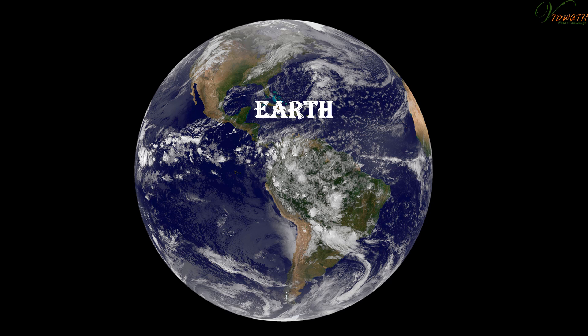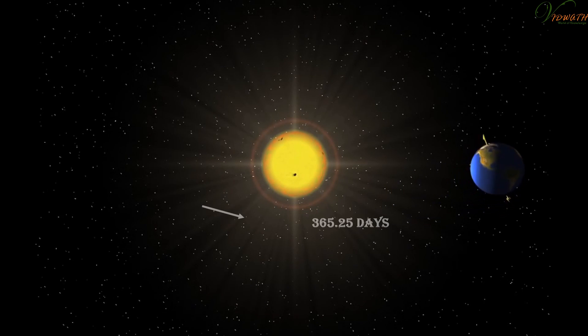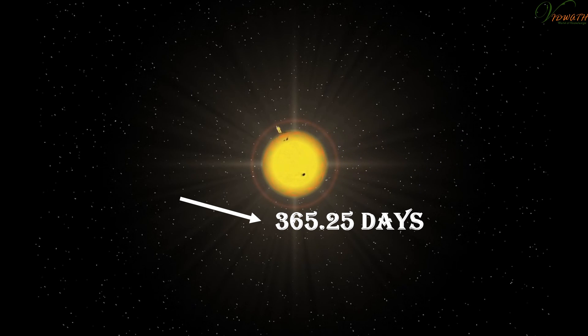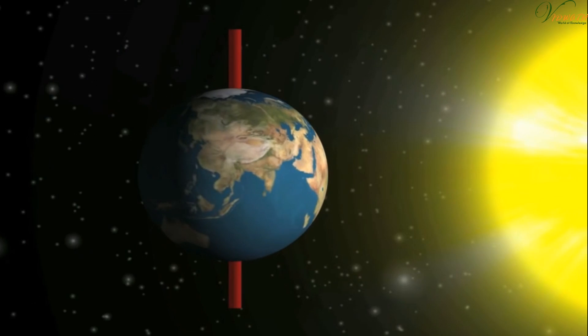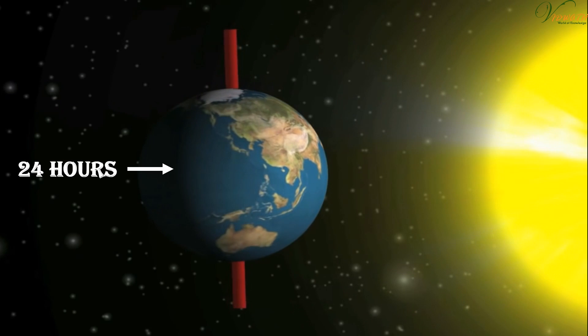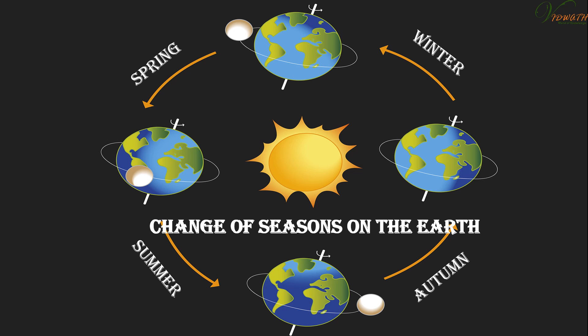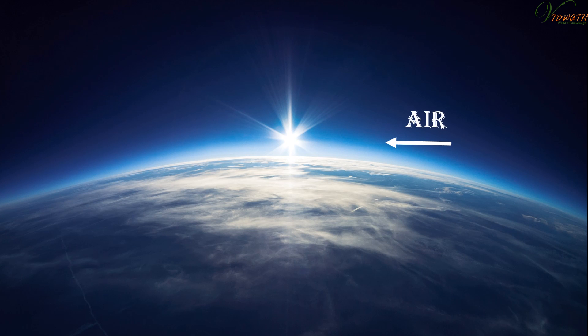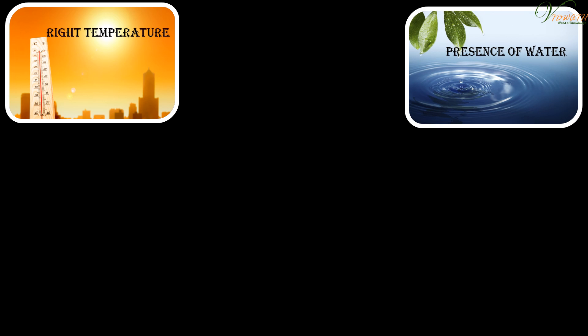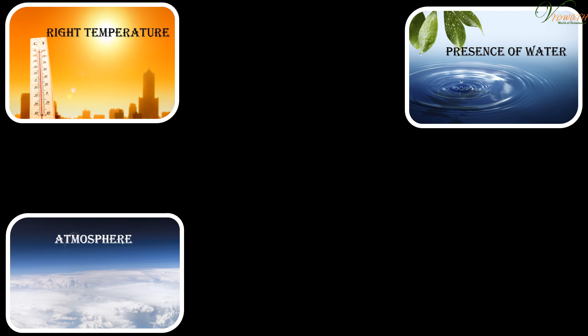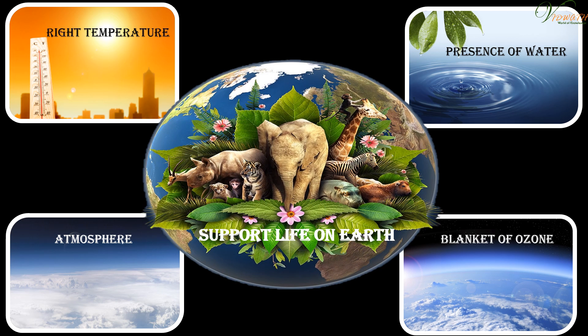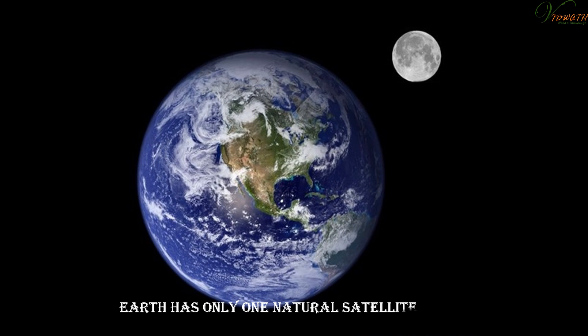Earth is the only planet on which life is known to exist. It takes 365.25 days to complete one revolution around the Sun and 24 hours to complete one rotation about its axis. The tilt of the Earth's axis is responsible for the change of seasons. There is a thin blanket of air surrounding the Earth called the atmosphere. The right temperature range, the presence of water and a suitable atmosphere, and a blanket of ozone support life on Earth. Earth has only one natural satellite — the Moon.